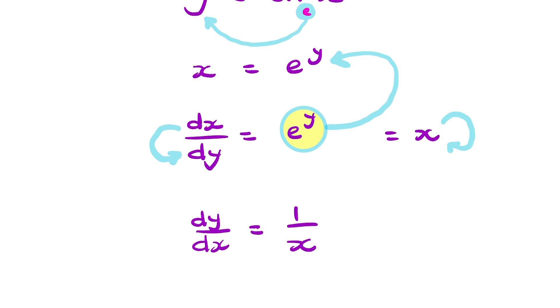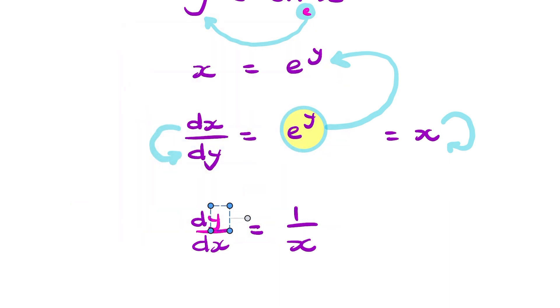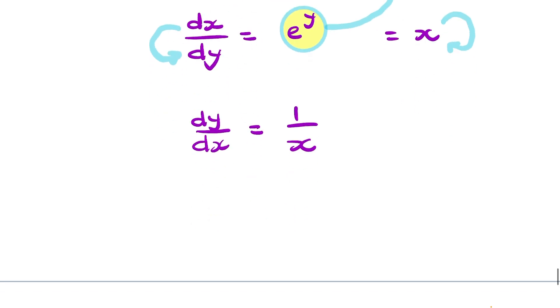So remember y here is simply ln x. So this y is ln x. So d by dx of ln x equals 1 over x. And that there is your final answer.